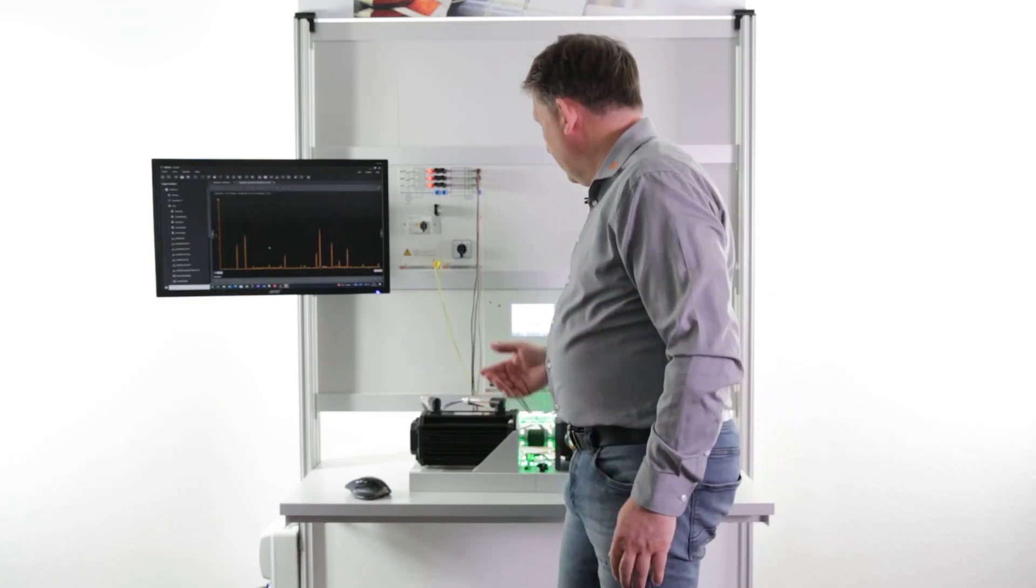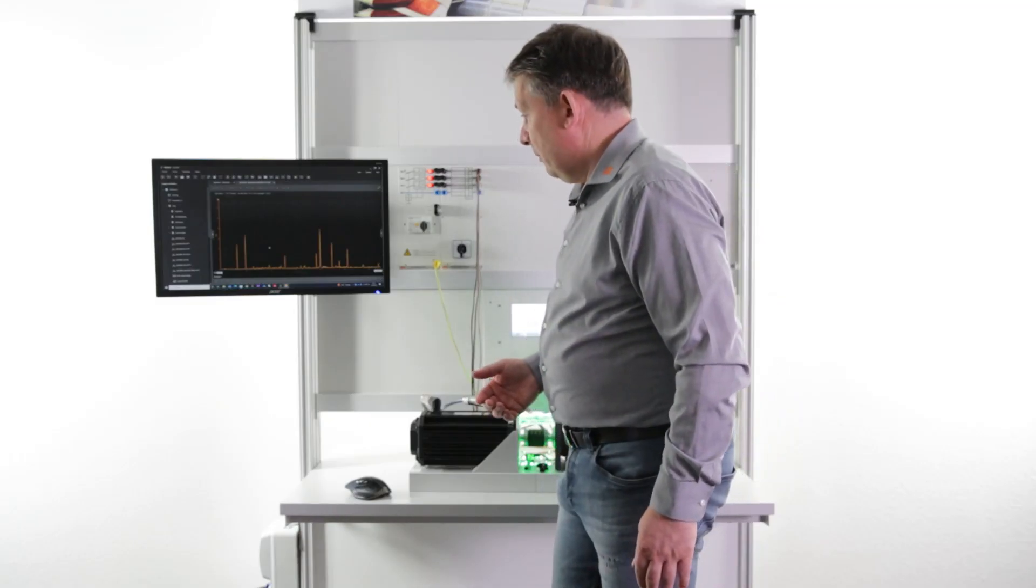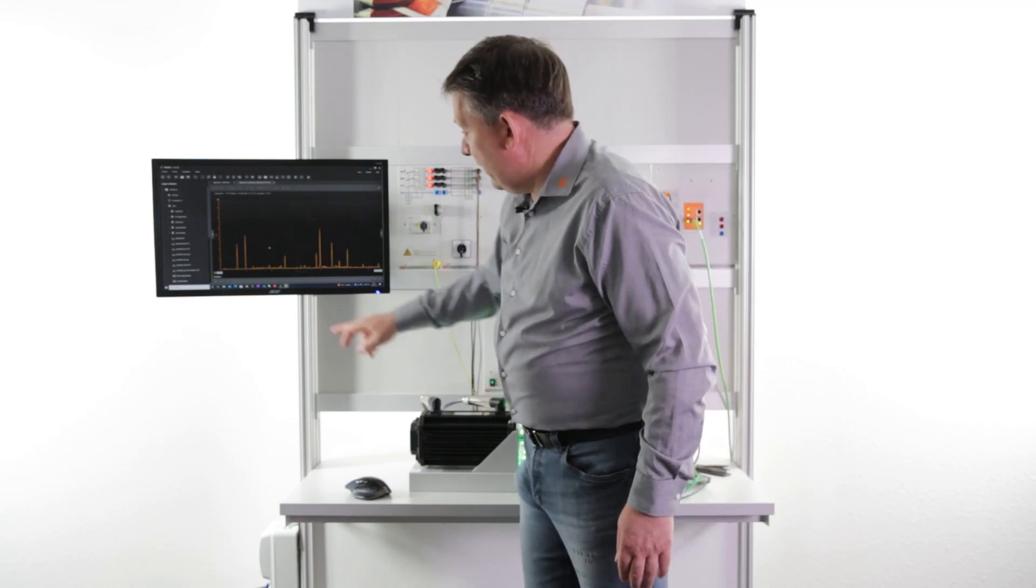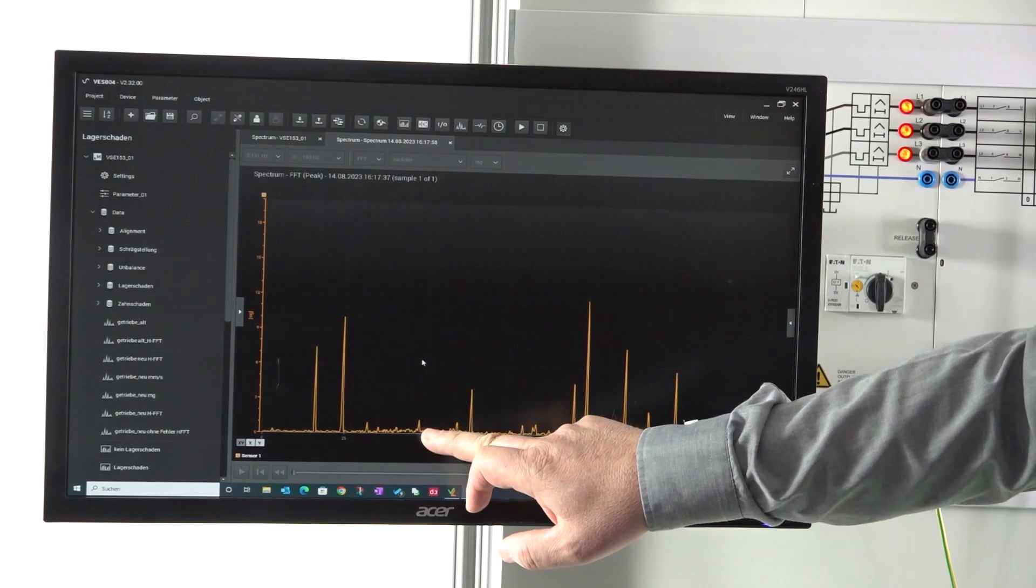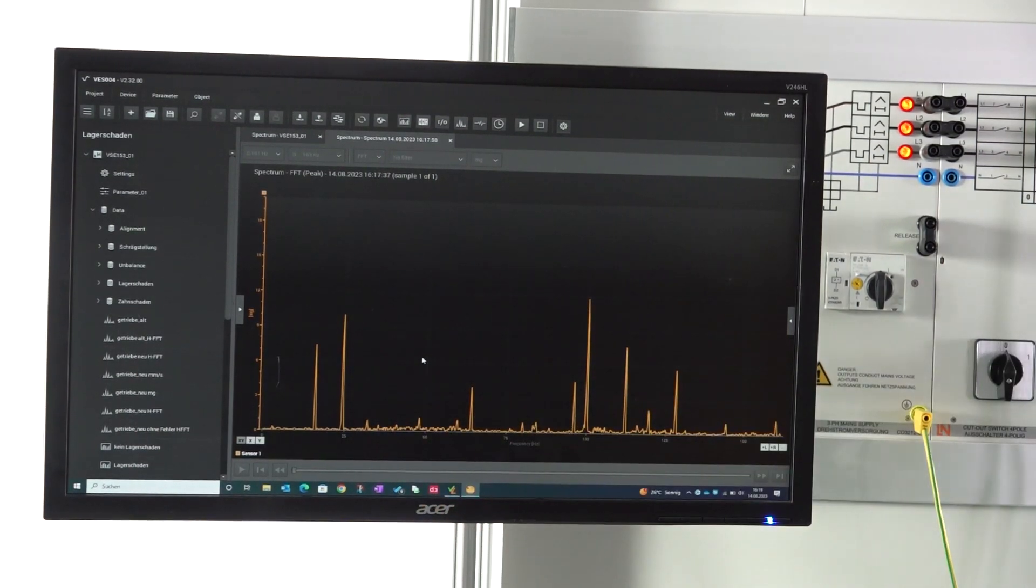Here I will see the complete spectrum and I see what happens inside the unit. Now we have here the drive with no misalignment and we see we have less harmonics than with the drive with the alignment fault.